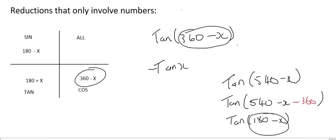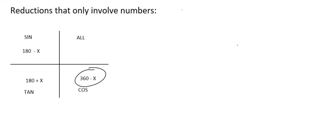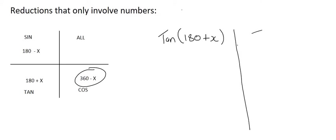In all of the previous questions, we typically had in the brackets a number as well as a letter such as x. In the next questions, we're going to be given only a number and we're going to try to simplify that number. I'll use two different questions to compare what we did in the previous video and what we're going to do now. In the previous video, you would end up with something like tan of 180 plus x. In this video, we're going to use tan of 200 as an example.